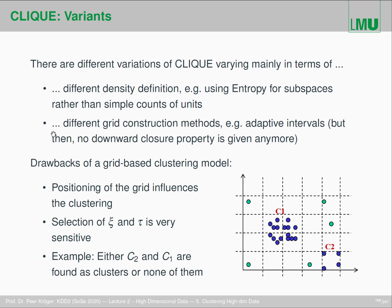The second aspect is that they use different grid construction methods — not a fixed grid construction, but adaptive intervals. In that case, usually no downward closure property is given anymore, so you end up again in best-first search or similar approaches.